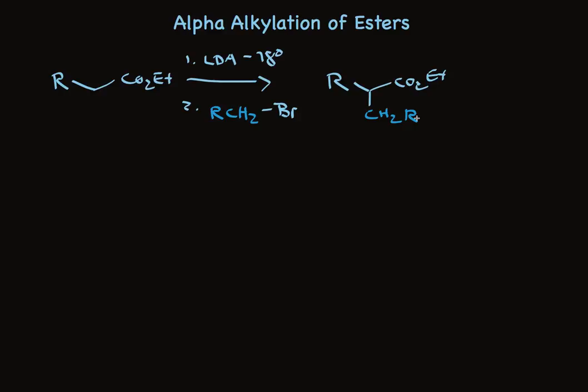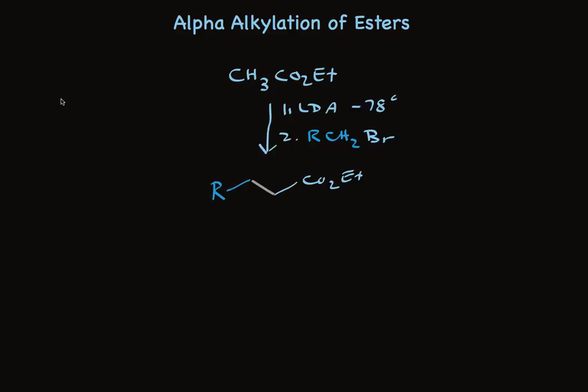So you see you can make rather complicated esters this way. And you see you can make these esters starting with ethyl acetate. Simply do two alkylations sequentially. I've shown the new carbon-carbon bond in tan.